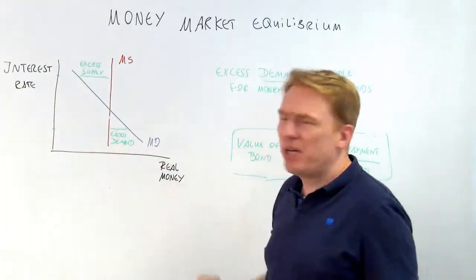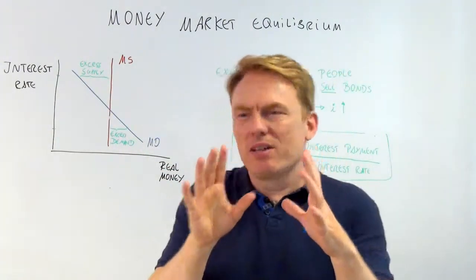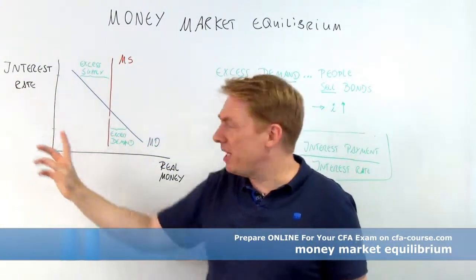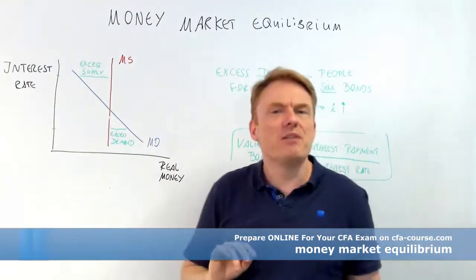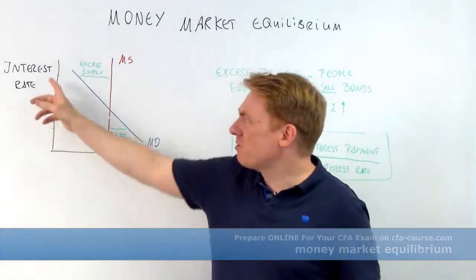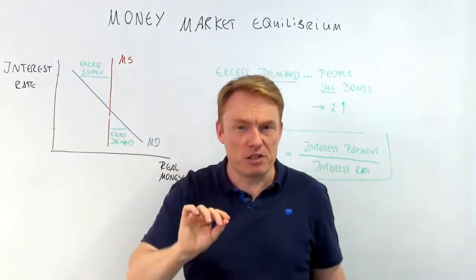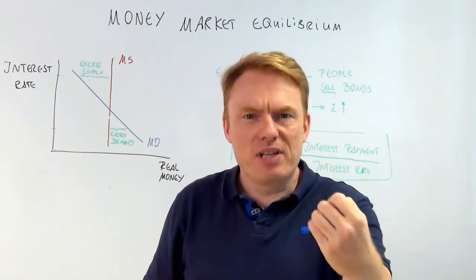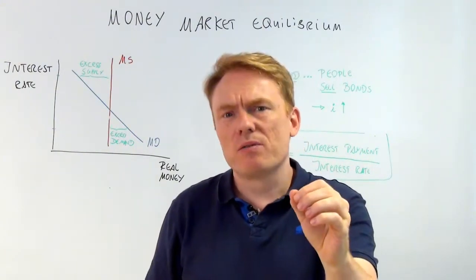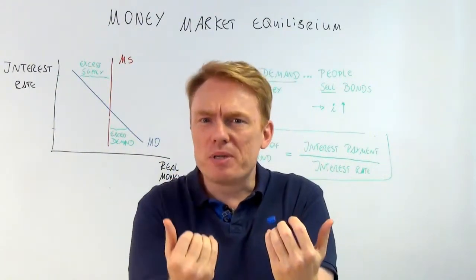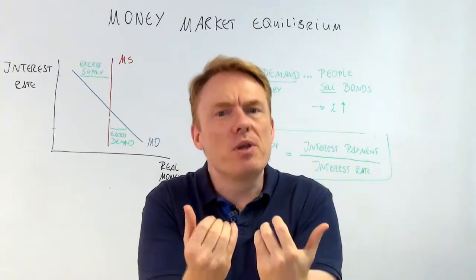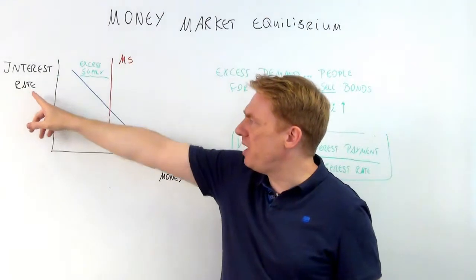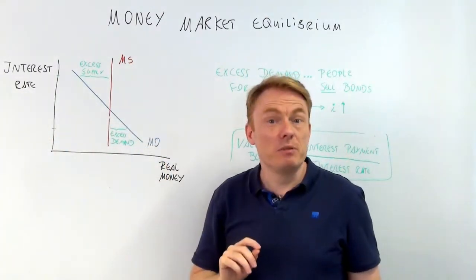This is the demand for money — the blue line — and it is going down, which means there is a negative correlation between the interest rate and the demand for real money. The interest rate is the opportunity cost for money. If the interest rate goes up, there is a higher incentive to put money in your bank account and a smaller incentive to have currency with you in your pocket.